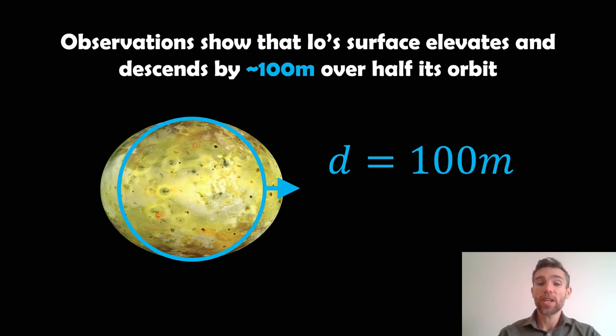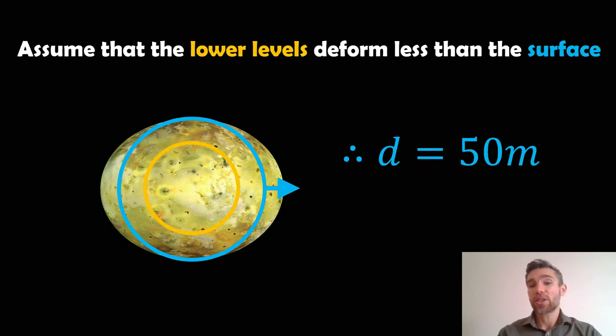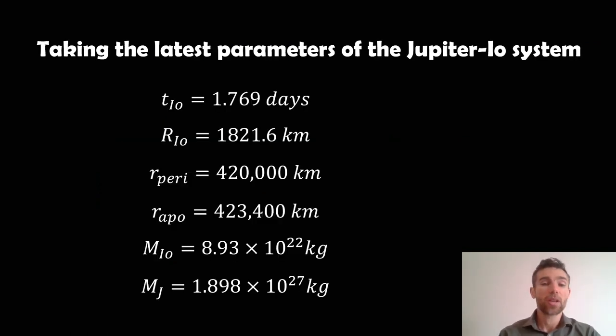So observations, because we've had spacecraft there, we can actually measure the deformation on its surface. And at the surface, it rises and descends by approximately 100 meters over half its orbit. So d is then going to equal 100 meters. However, that's the surface deformation. And we can make some assumptions that actually the lower levels further down are not going to deform as much. So let's approximate that d distance across the whole of Io. And let's just say it's going to be 50 meters as an approximation, because it's not going to be at the surface mostly, it's going to be a little bit less than that. So let's say 50 meters.